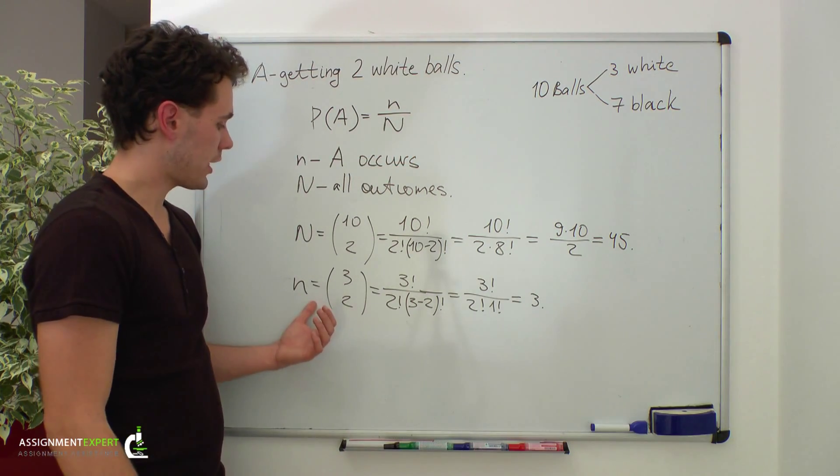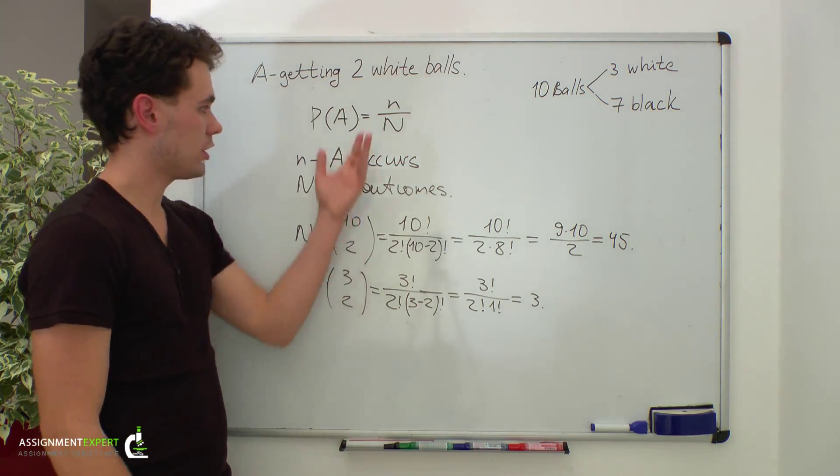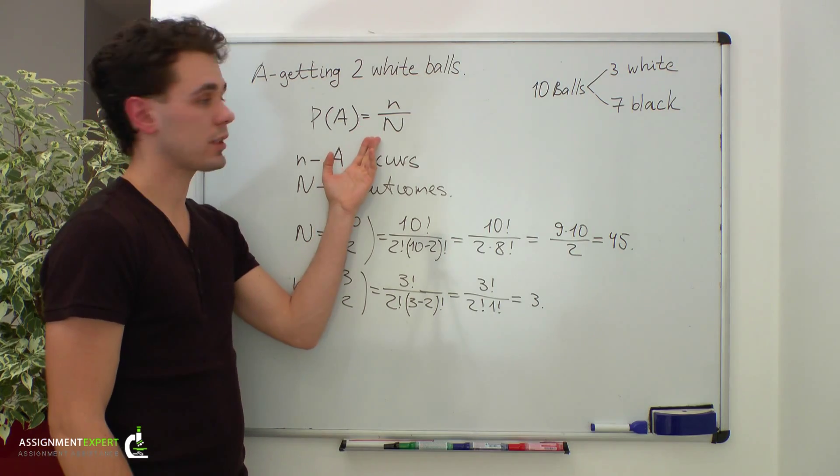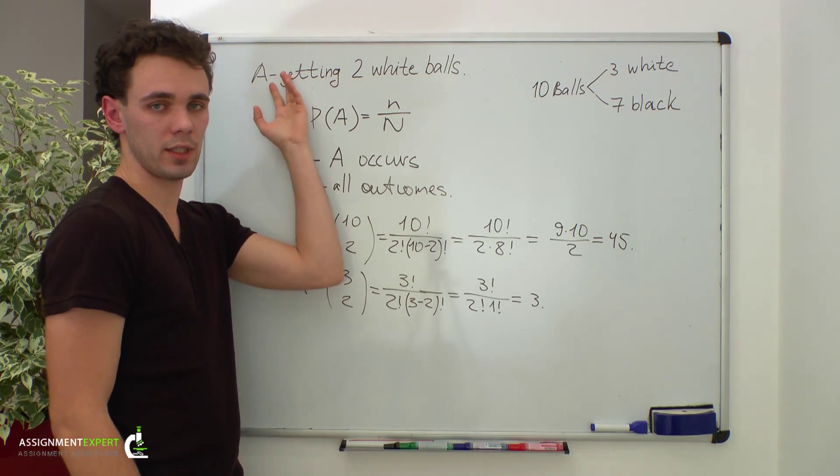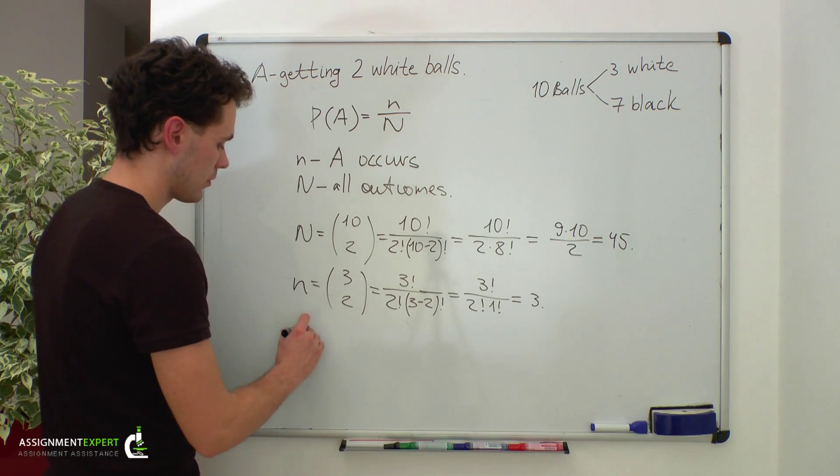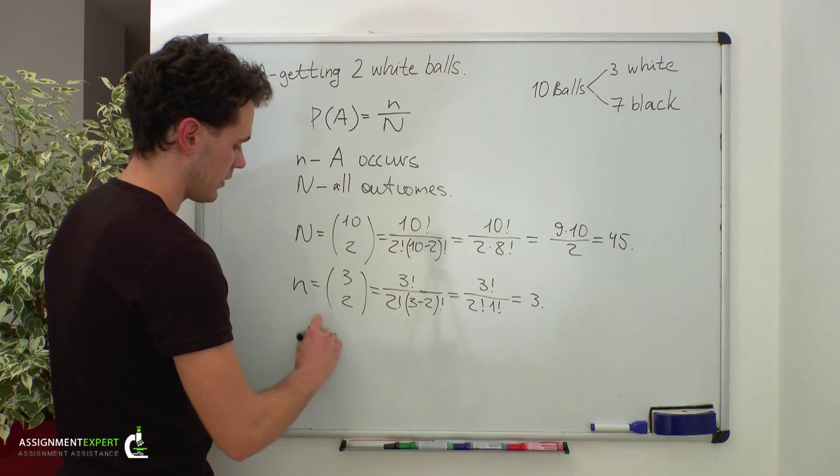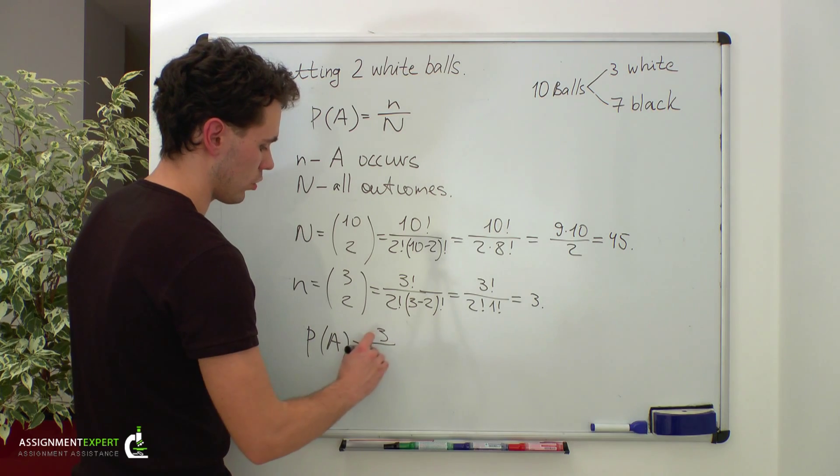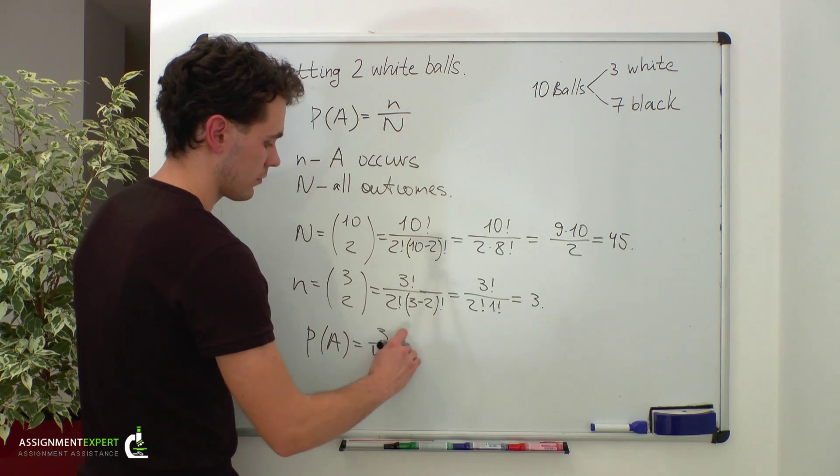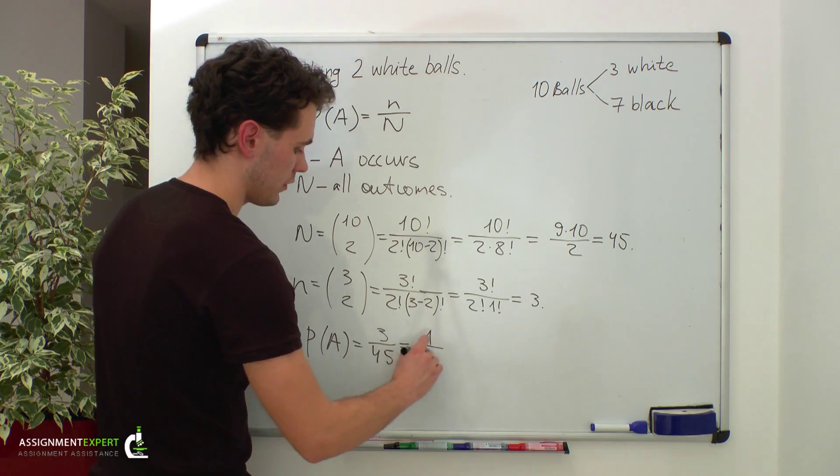Now, as we know small n and capital N, we can insert them into the probability formula and calculate the probability of event A. The probability of event A equals three over forty-five, which gives us one fifteenth.